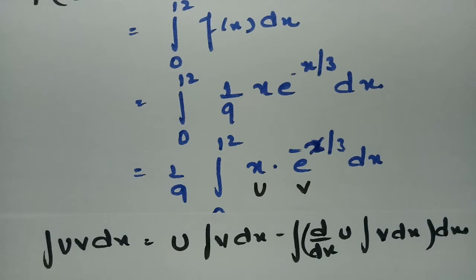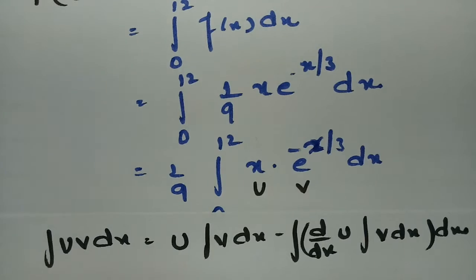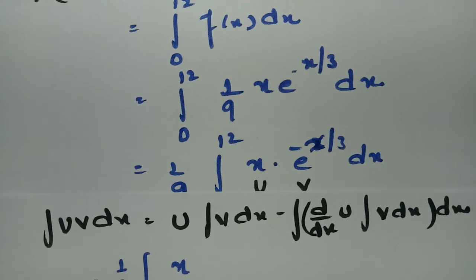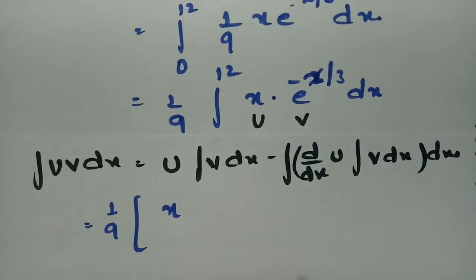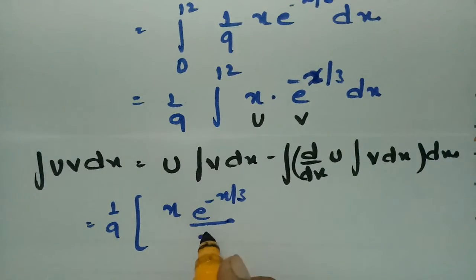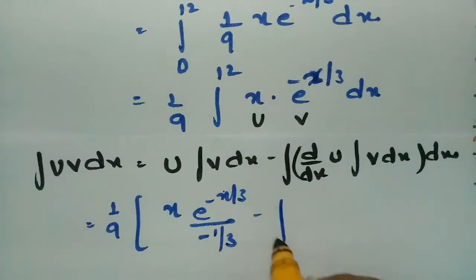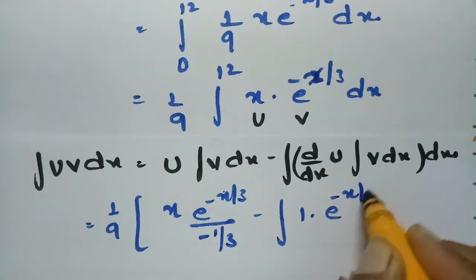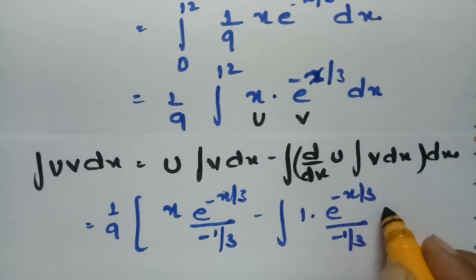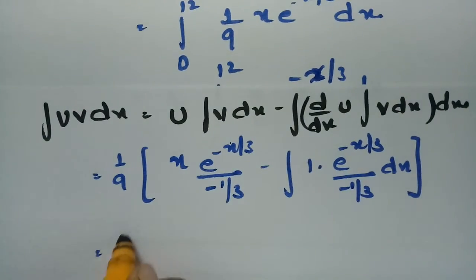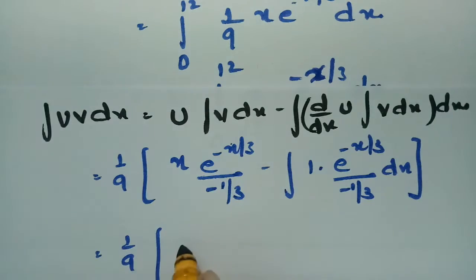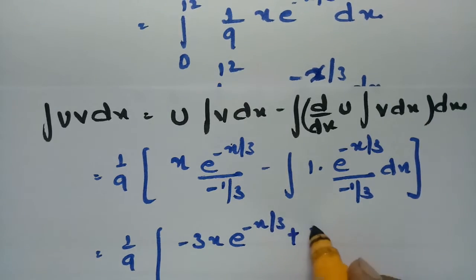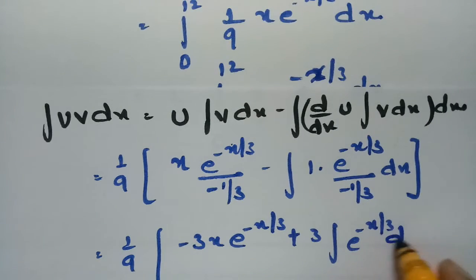Applying the formula: (1/9) times — leaving u = x as it is, integrating v = e^(-x/3) gives −3e^(-x/3); minus the integral of the derivative of u (which is 1) times ∫e^(-x/3) dx = −(1/3)·e^(-x/3). Bringing the factor into the numerator gives −3x·e^(-x/3), minus of minus giving plus 3 times e^(-x/3) dx.